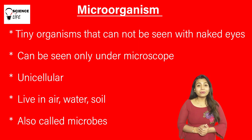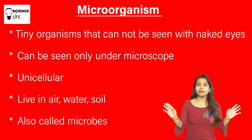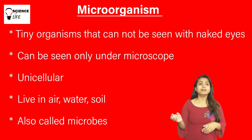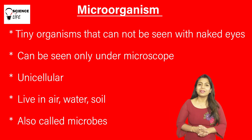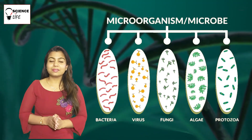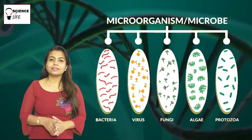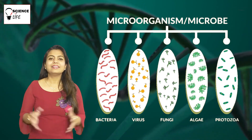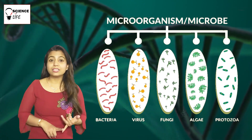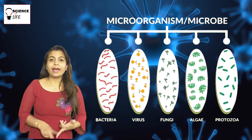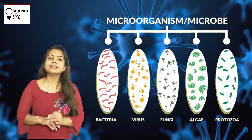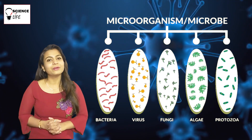Where can we find micro-organisms? Everywhere — soil, air, water, marshy areas. Everywhere we can find micro-organisms. Now let's come to the micro-organisms classification. Micro-organisms are actually categorized into five groups: the first one is bacteria, then virus, then algae, fungi, and protozoa. These are the five groups of micro-organisms.